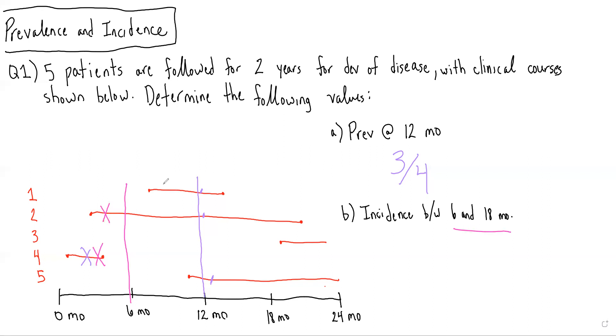Those are the only patients who could develop a new case of the disease starting at six months. And we see between six and 18 months, patient one develops the disease, and patient five develops the disease. Therefore, the incidence between six and 18 months would be two out of three.